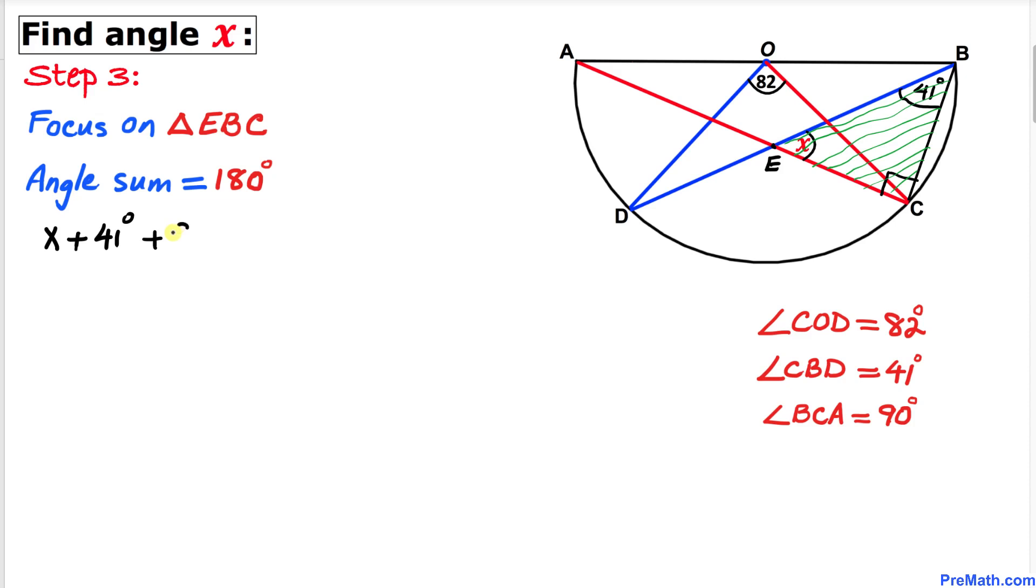131 degrees equal to 180 degrees. Now let's subtract 131 degrees from both sides. This is gone, so X turns out to be, when we subtract on the right-hand side, that is going to give us 49 degrees. And that's our answer.